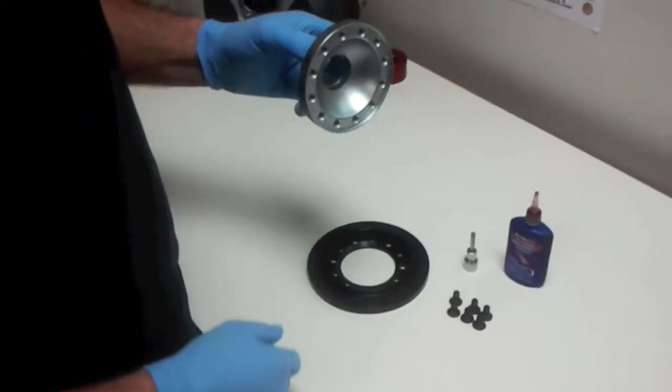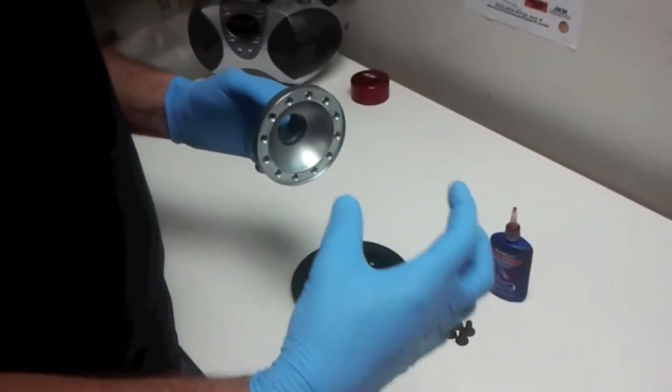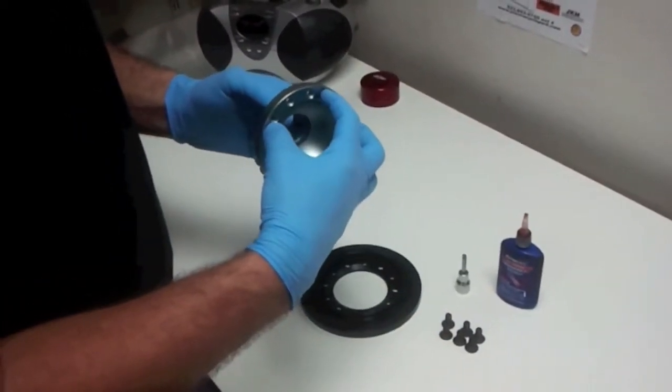Look right here, this is the right side drive hub. This is where your right side CV axle bolts right to the inside hub.